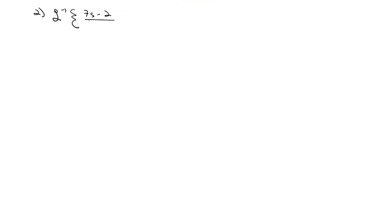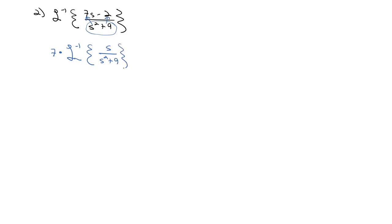Let's try one that's a little bit more involved. How about we do the inverse Laplace transform of 7s minus 2 over s squared plus 9. Now we don't have anything that looks like this in my Laplace transform table, but what I can do is distribute this division onto both terms. When I do, I'm going to have an inverse Laplace transform — I'm going to pull the 7 out front of s over s squared plus 9, and then I'm going to subtract, pulling the 2 out of the inverse Laplace transform of 1 over s squared plus 9.